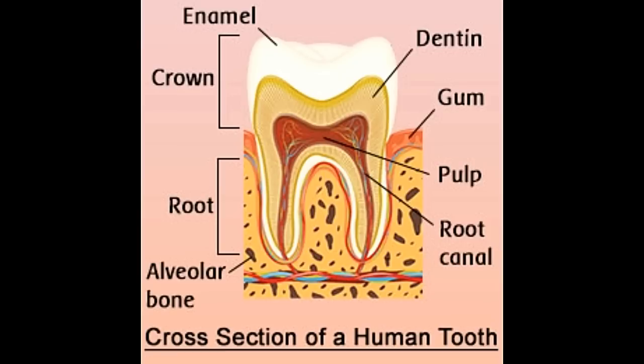Did you know? The enamel coating that covers the crown of the teeth is the hardest part of the human body. While human teeth start forming in the womb, the process of teething or the eruption of teeth through the gums begins after 6 months.